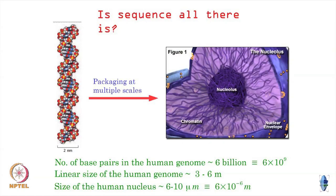Here is the thing we are talking about. If you think about the number of base pairs in the human genome, we have some 6 billion base pairs — 6 × 10⁹ base pairs. If you stretched it out, it comes to on the order of meters, around 3 to 6 meters. And you need to package it into a nucleus which is on the order of 6 to 10 microns — 10⁻⁶ meters.